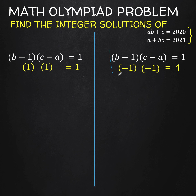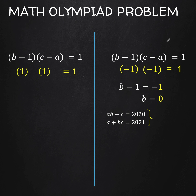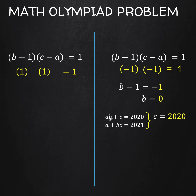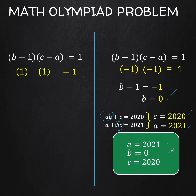In the first case, B minus 1 equals negative 1. Adding 1 to both sides, we get B equals 0. Let's bring back the original equations and substitute the value of B. With B equals 0, the first equation becomes 0 plus C equals 2020, so C equals 2020. In the second equation with B equals 0, A plus 0 equals 2021, so A equals 2021. We now have one set of solutions: A equals 2021, B equals 0, and C equals 2020.